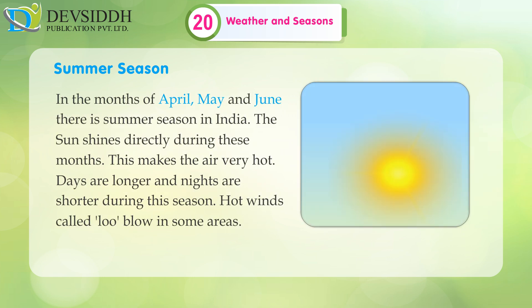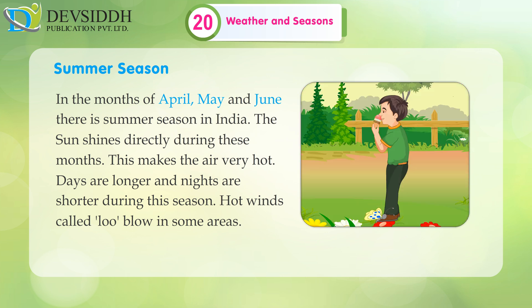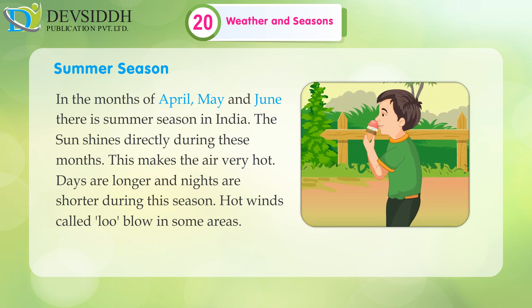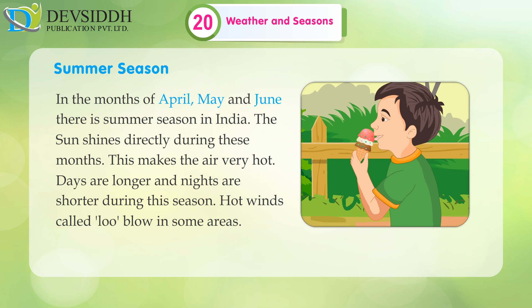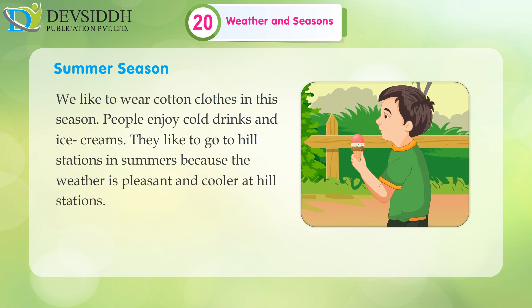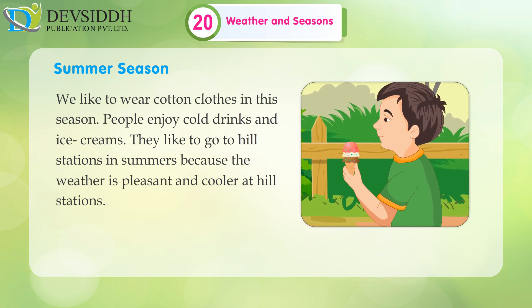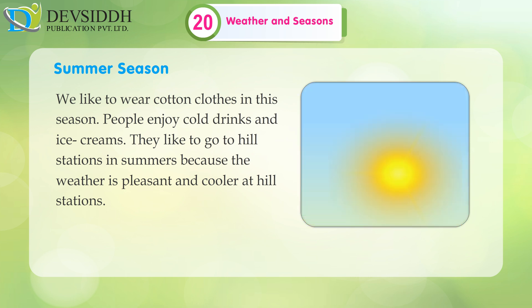Summer Season. In the months of April, May, and June, there is summer season in India. The sun shines directly during these months, making the air very hot. Days are longer and nights are shorter during this season. Hot winds called loo blow in some areas. We like to wear cotton clothes in this season. People enjoy cold drinks and ice creams. They like to go to hill stations in summers because the weather is pleasant and cooler there.